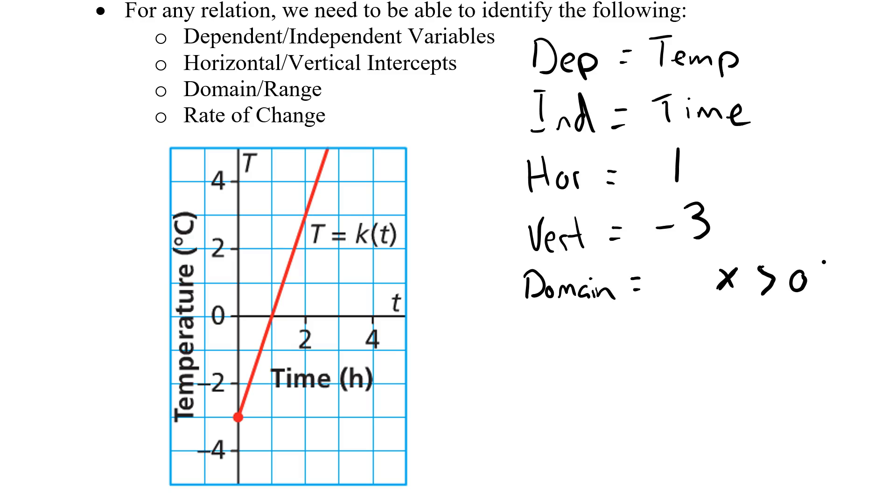So our x has to be larger than 0. Now, with domain and range, we have to ask ourselves one more question: Could it be equal to 0? And on our graph, our dot here at 0 is colored in, so that means yes, it could be equal to 0. So my x is greater than or equal to 0.